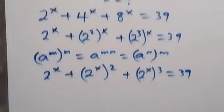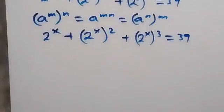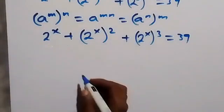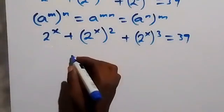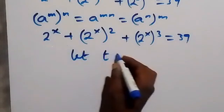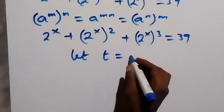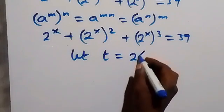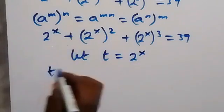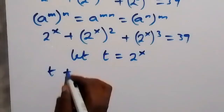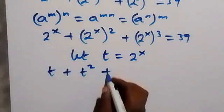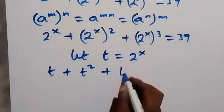We have 2 raised to power x common throughout, so we use a substitution. Let t equal 2 raised to power x. Then this equation becomes t plus t squared plus t cubed equals 39.